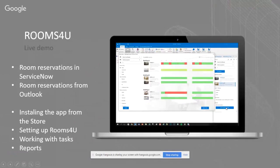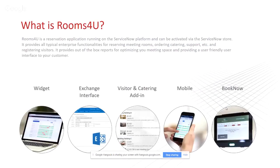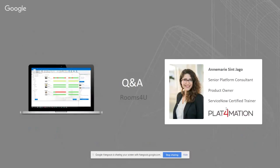We've covered room reservations in ServiceNow and via Outlook, we quickly looked at installing the app from the store and setting up Rooms For You, we saw the overview of amenity requests, and we glanced at the available reports. We saw the first three components in action: the widgets, the Exchange interface, and the Visitor and Catering add-in. For the mobile and Book Now device, I recommend searching 'Rooms For You Platformation' online where you'll find videos showing how they work.